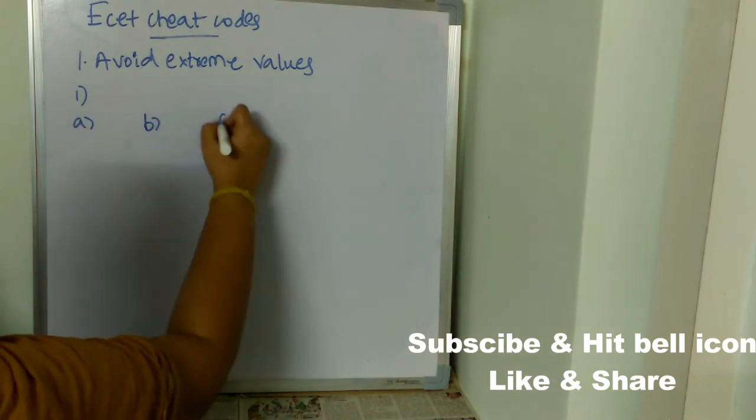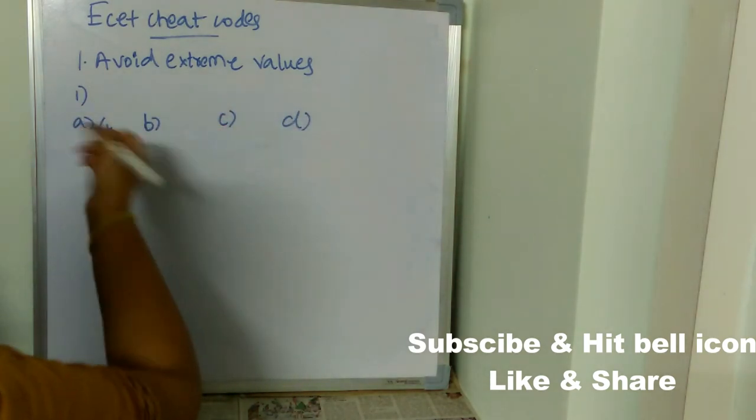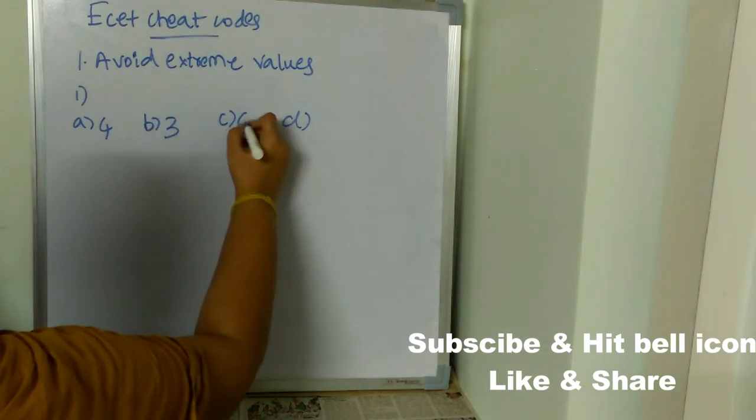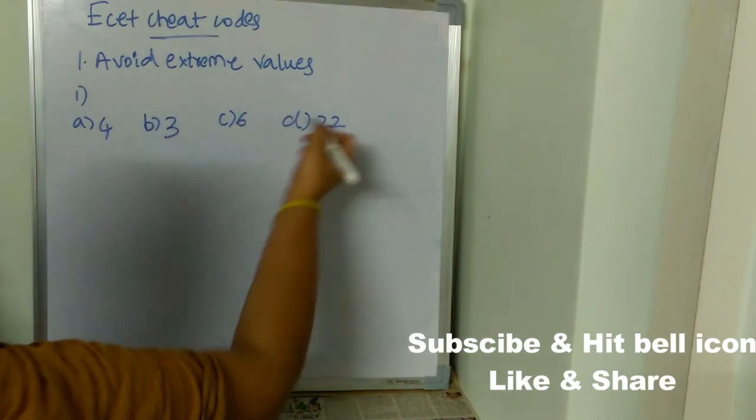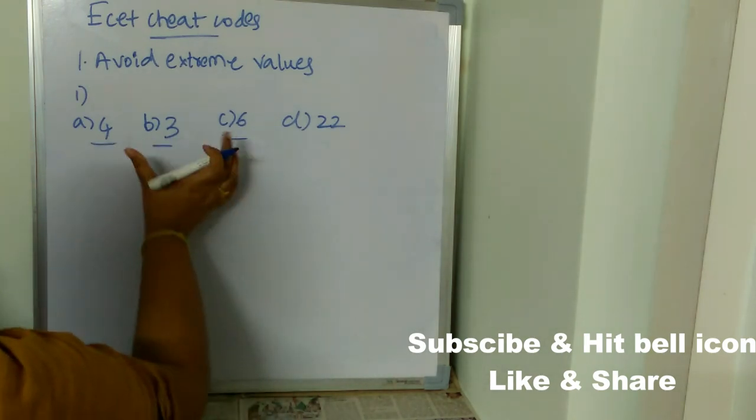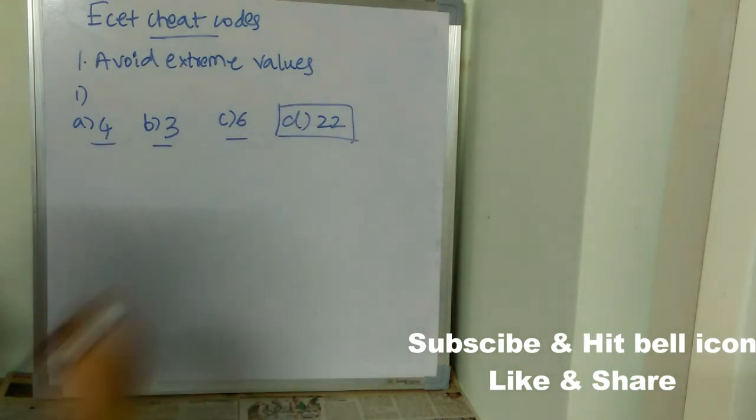Option A is 4, option B is 3, option C is 6, option D is 22. So see, these are all single digit values, but option D is completely different. It's a double digit value and it is extreme.